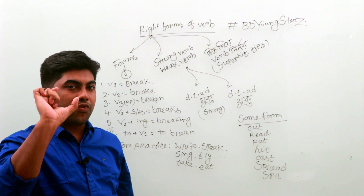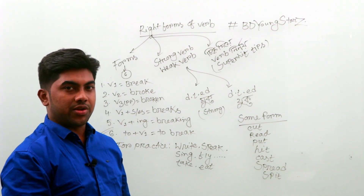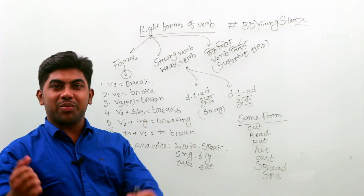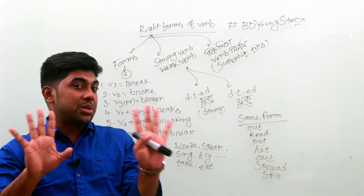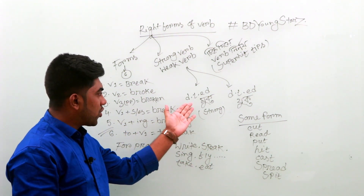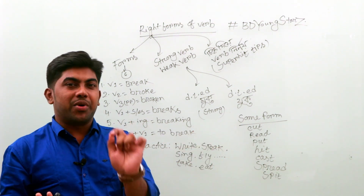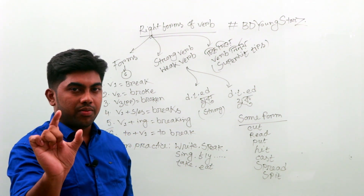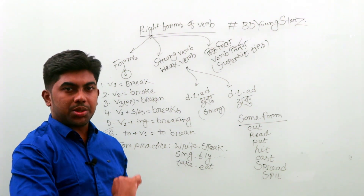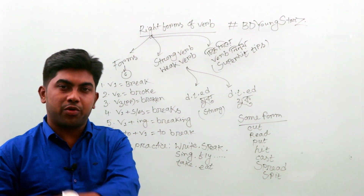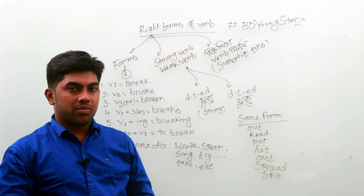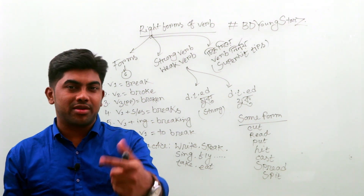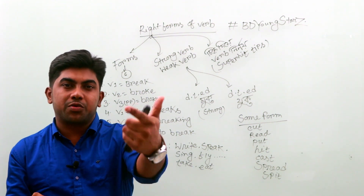The second category is strong verb and weak verb. A strong verb is one where the vowel sound changes between V1, V2, and V3 — the verb changes its form internally. For example: come, came, come; do, did, done; sing, sang, sung; write, wrote, written; speak, spoke, spoken. These are strong verbs because the internal vowel or spelling changes.